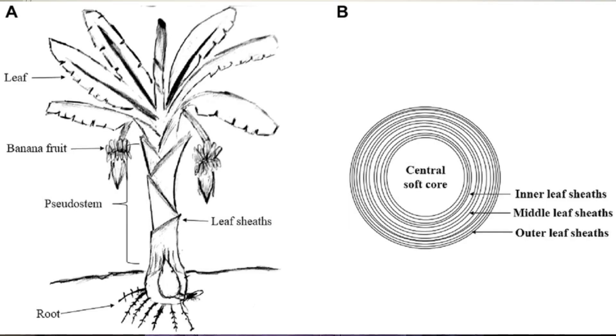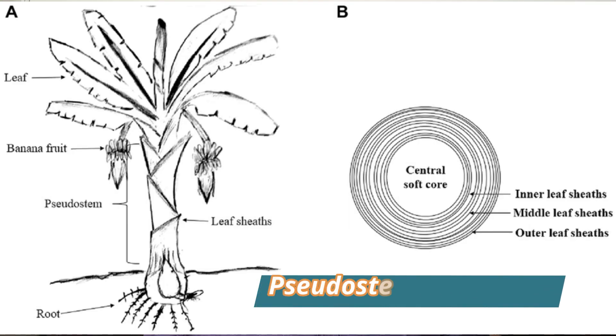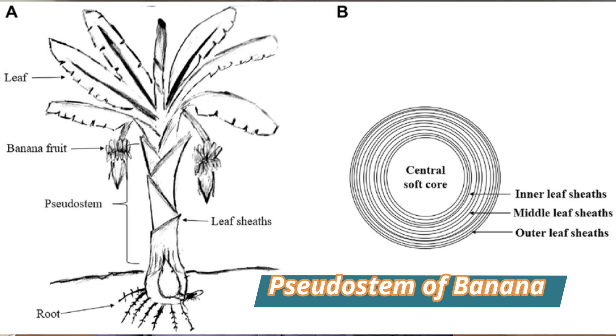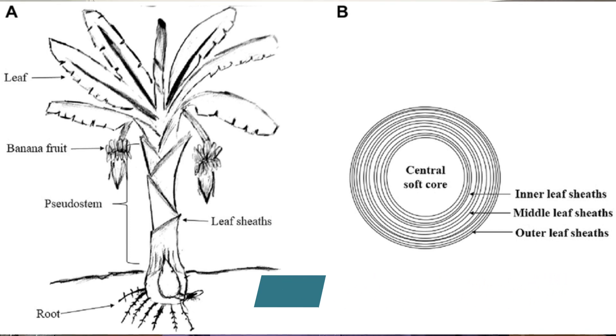Banana is a monocotyledonous plant. The stem is rhizomatous — there is an underground rhizome and a fibrous root system. What you see on the outer side is not actually a stem; it is a pseudo-stem, which is made up of closely arranged sheathing leaf bases, and at the tip there is a crown of very large leaves.